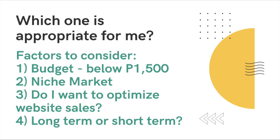Number two: niche market. In my earlier video I discussed niche markets — these are specific markets that are usually underserved. If you do have a niche market, I suggest running ads via Ads Manager because it has advanced targeting capabilities, such as narrowing your audience. For example, if you're selling soap, you can target people who have 'body care' as their interest and are also considered an 'engaged shopper' based on their behavior.